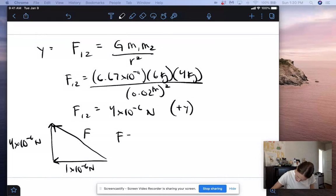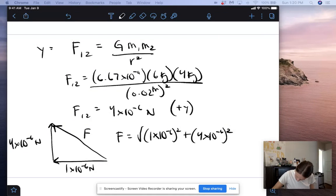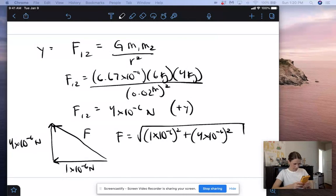Okay, so force is equal to the square root of 1 times 10 to the negative 6 squared plus 4 times 10 to the negative 6 squared. So we end up getting about 4.12 times 10 to the negative 6 newtons for our force.